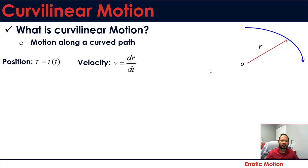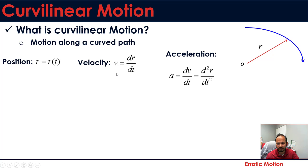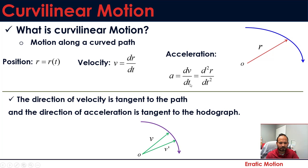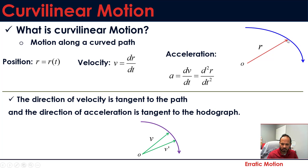Now, if we have the position vector, how can we find the velocity? If you take the first derivative, you will get the velocity. Similarly, if you take the second derivative of position r, or the first derivative of velocity, you get acceleration. One important thing: the direction of velocity is always tangent to the path.